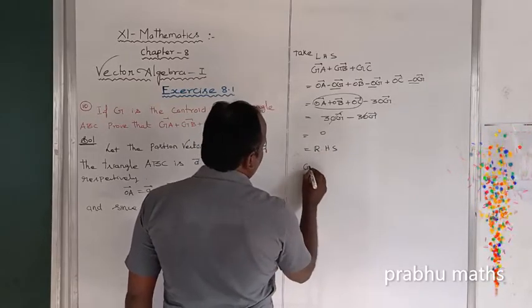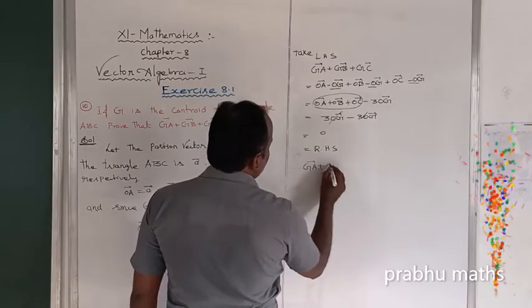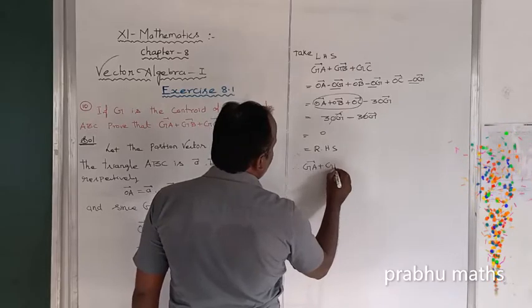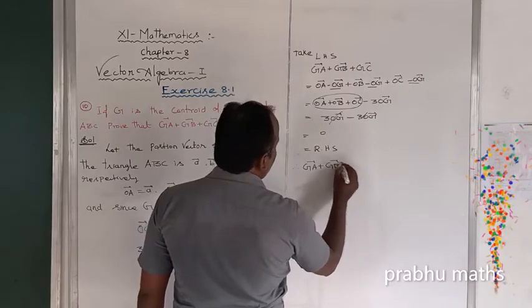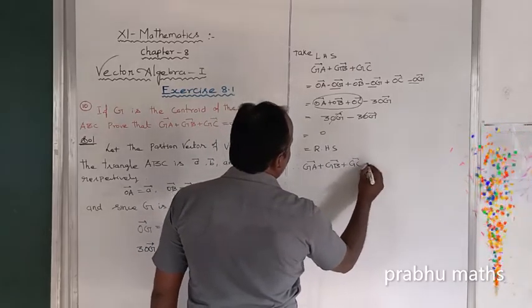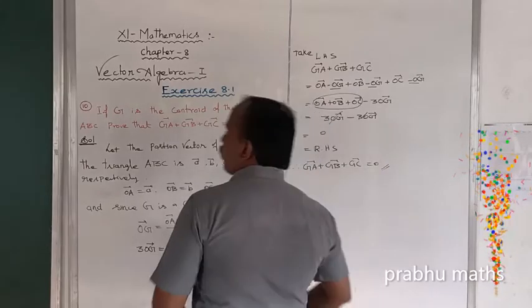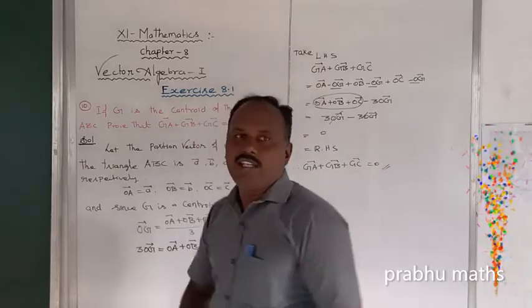Therefore, GA vector plus GB vector plus GC vector is equal to 0. That is the solution.